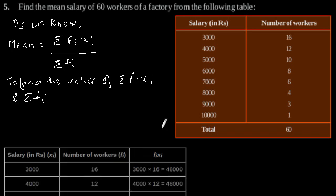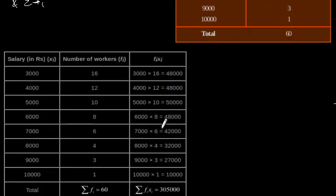So, this is our required table which calculates summation of fi into xi which is 305000 and summation of fi which is equal to 60.